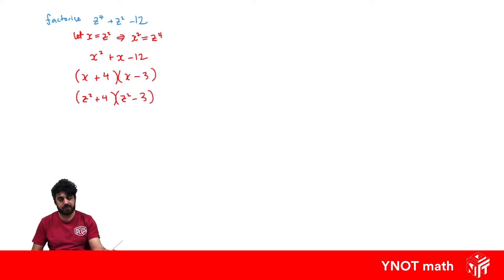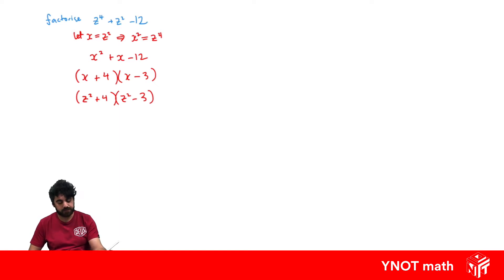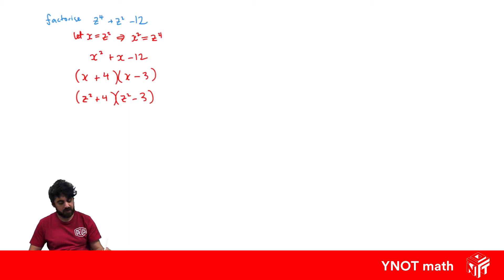If we were factorizing over the set of real numbers, this would be a perfectly acceptable factorization. But to factorize over the set of complex numbers we need to keep going, because we have a polynomial of degree 4 and we're expecting four factors.